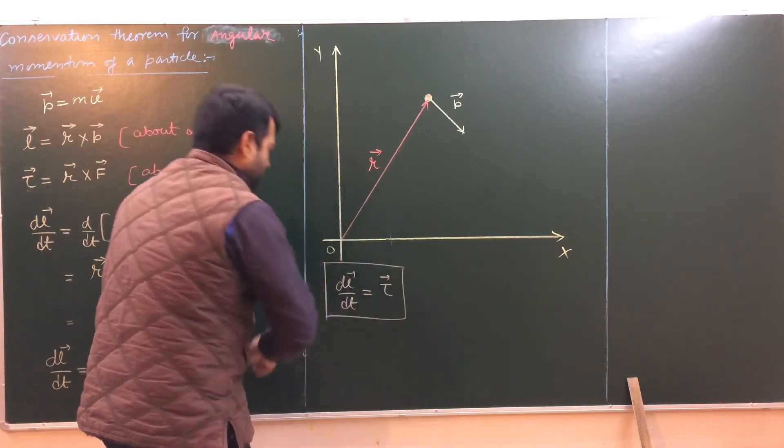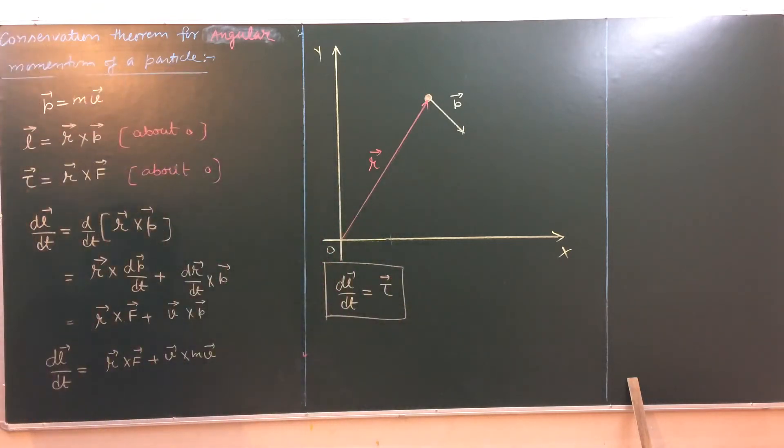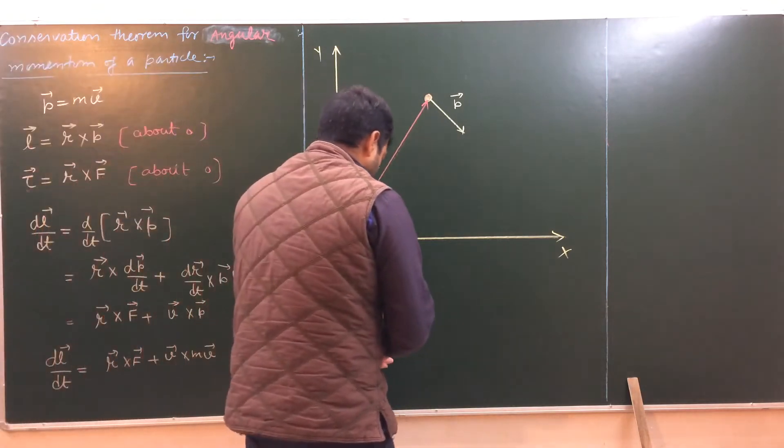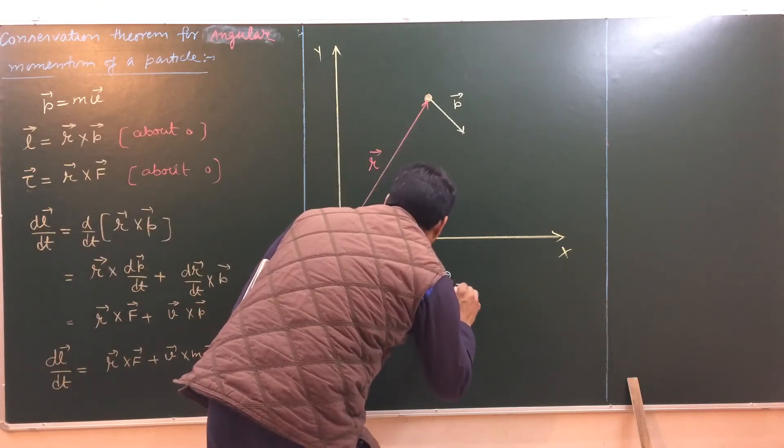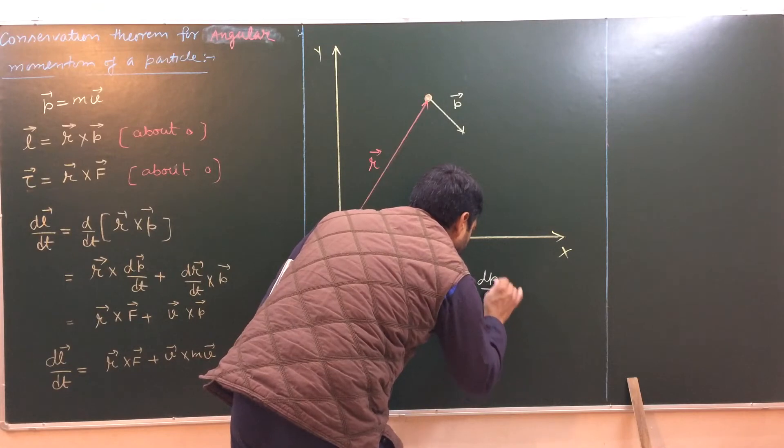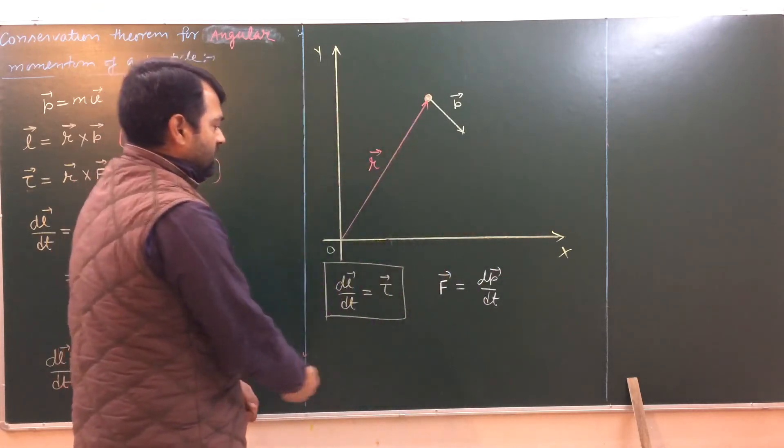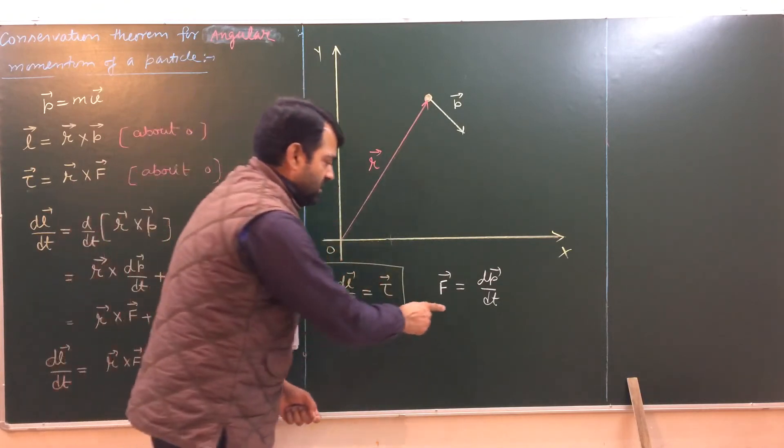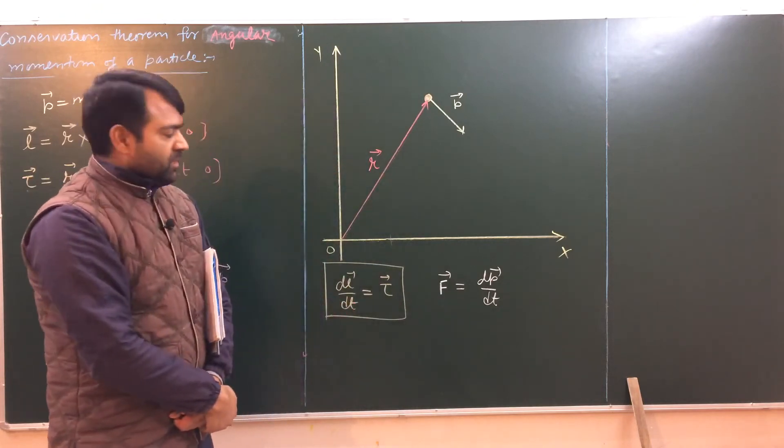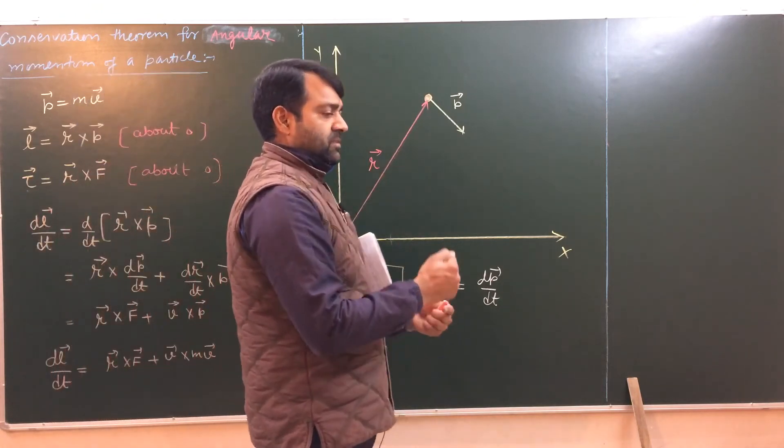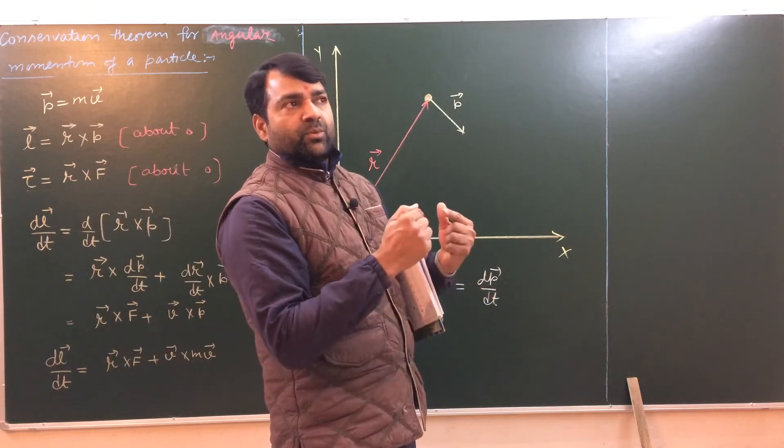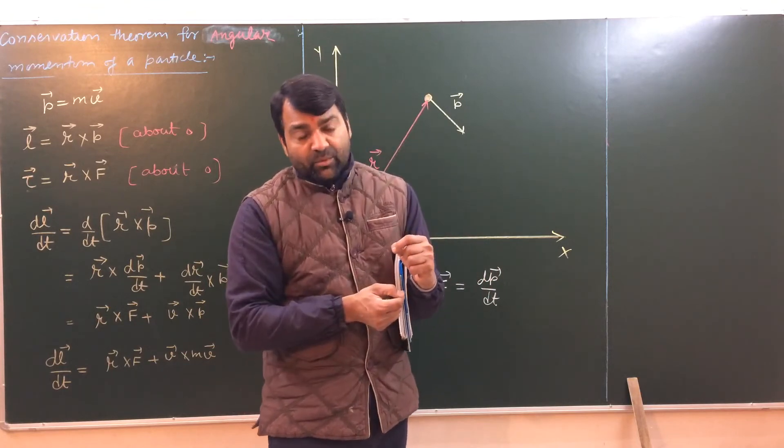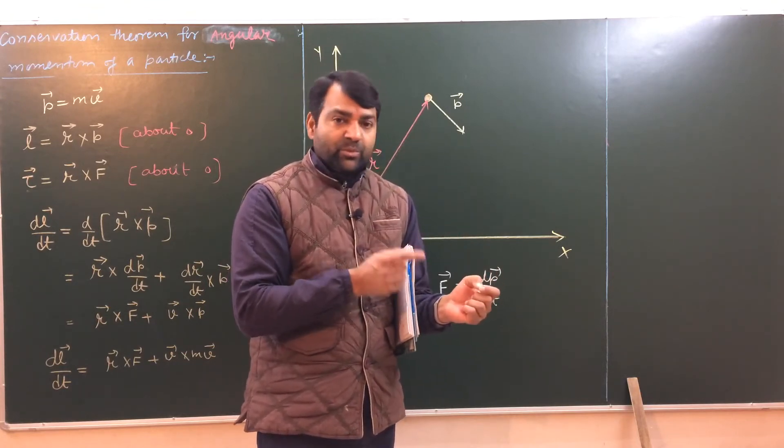This we can say is the rotational analog of our Newton's second law. Our Newton's second law was F is equal to dP by dt. This equation is equivalent to this equation. The only difference is that here linear motion and here rotational motion is involved. So to change the linear state, linear state means to change the linear momentum. If you want to decrease linear momentum or increase linear momentum or to change the direction, you need a force.